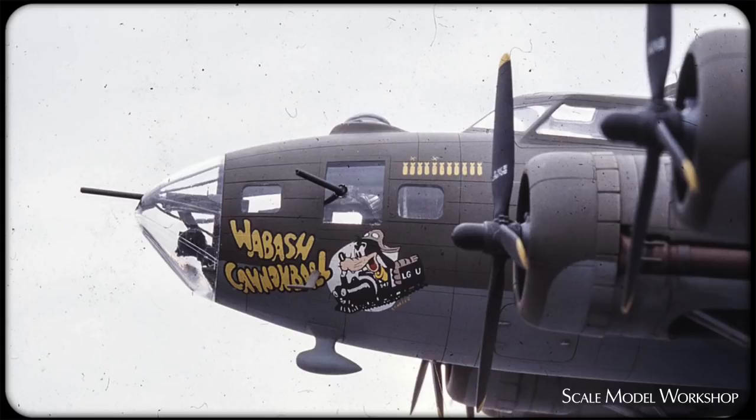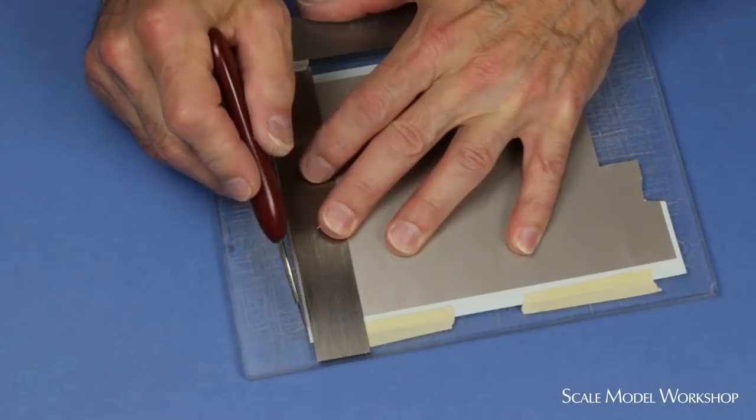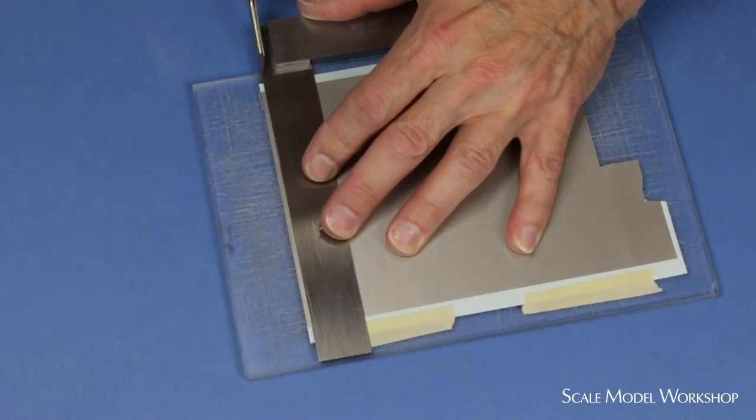Decal can also be used effectively to simulate framing, especially when the framing is very narrow. The decal can be cut in strips the same way as the masking tape.